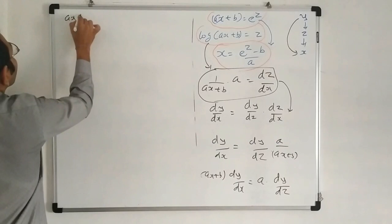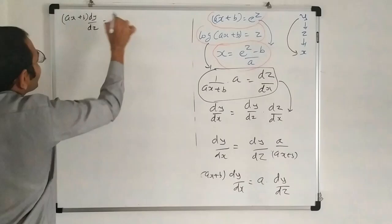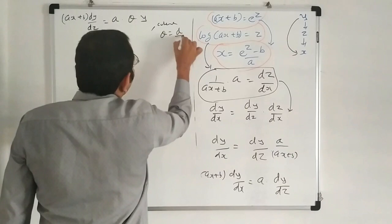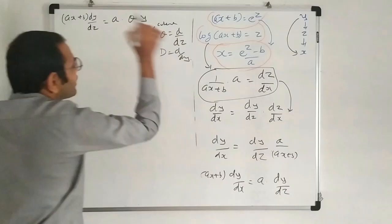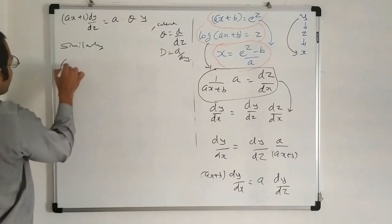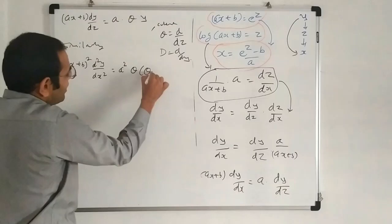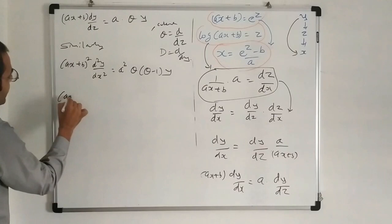So we can say that (AX + B) dY/dX = A × (D/dZ) × Y = A·θ·Y, where θ = d/dZ and capital D = d/dZ. Similarly, (AX + B)^2 × d²Y/dX² = A² × θ(θ − 1)·Y, where θ = d/dZ.